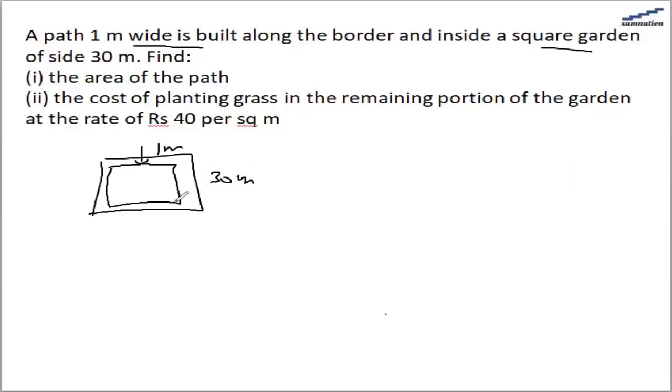So there are two squares forming: one is 30 meter outside and the inner square is 28 meter. So we need to find out the area of the path.